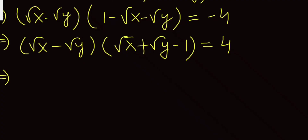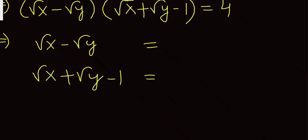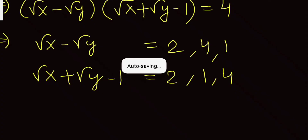Our aim is to find positive integer solutions if possible. So we need to find pairs of integers whose product is four. The possibilities are: two and two, one and four, four and one, and all possible positive or negative combinations. We'll try these one by one.